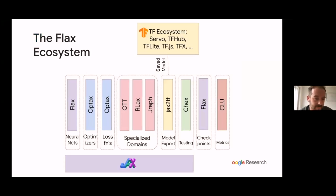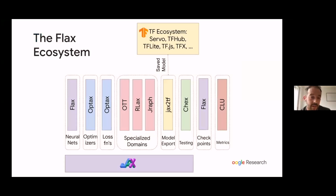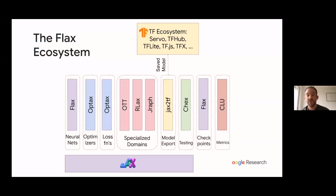For specialized domains we have OTT for optimal transport, RLax for reinforcement learning, and JRAPH for graph neural networks. There's also jax2tf — built by the JAX team — which takes a JAX graph and converts it directly to a TensorFlow graph, allowing you to export it to a saved model and use everything the TensorFlow ecosystem has to offer, like serving, or running your models on the web or in the browser.